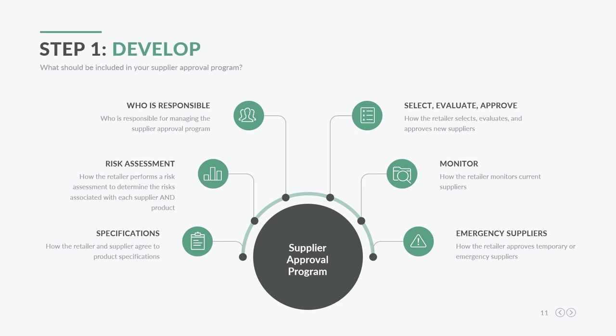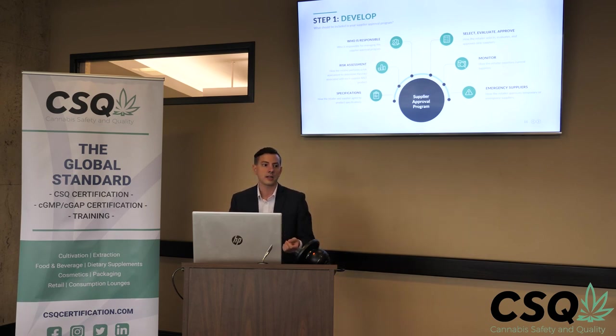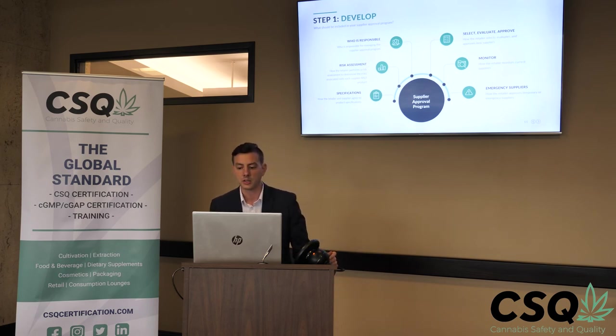The written supplier approval program also covers how you select, evaluate, and approve suppliers. From there, you need to monitor them on at least an annual basis — though really you'll be continuously monitoring as you receive products, making sure what you're getting matches the specifications. But you need an in-depth review of all suppliers at least once annually, which is when the supplier scorecard comes in.